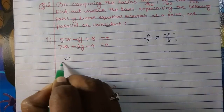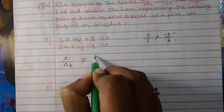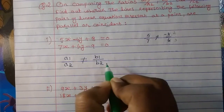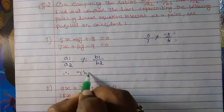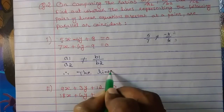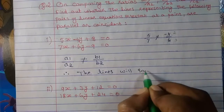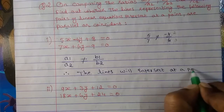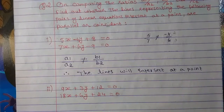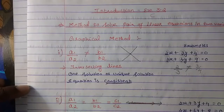So therefore, a1 upon a2 is not equal to b1 upon b2. Therefore, the lines will intersect at a point. So this is the answer, because when both are not same, the graph will be intersecting.